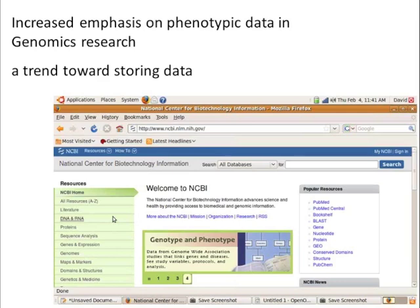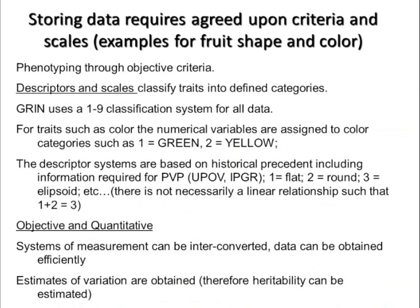It's important to recognize that, but more importantly, from a breeding perspective, having archived phenotypic data is going to give us more power to work across years and environments. So if we're going to be storing data, it requires that we agree upon criteria and scales. Looking at this slide from a historical perspective, if we look at the system that the National Plant Germplasm System uses in GRIN, it's a one-to-nine classification system for all data. For traits such as color, we would assign a numerical variable — one is green, two is yellow. That's okay to a certain extent, but there are some flaws with it if you think about quantitative analysis.